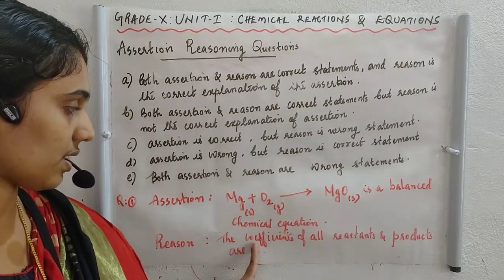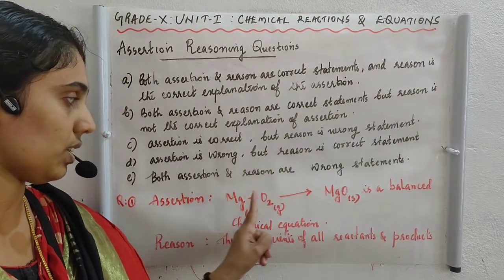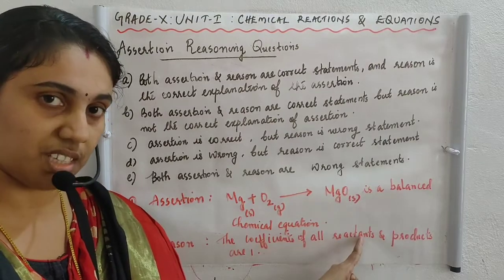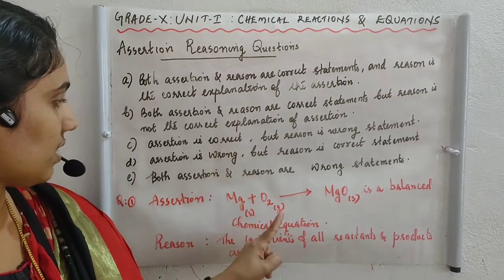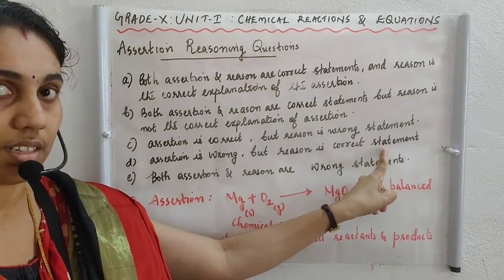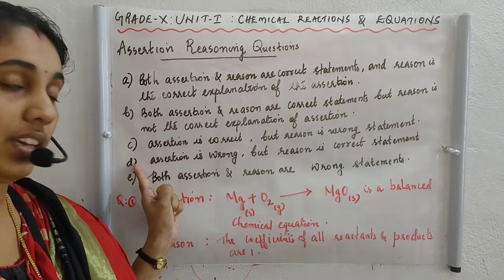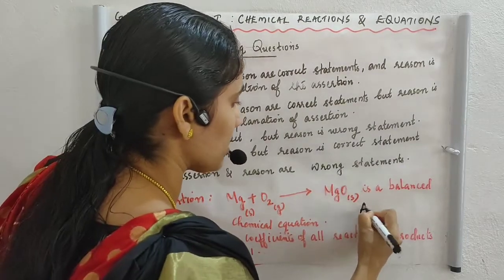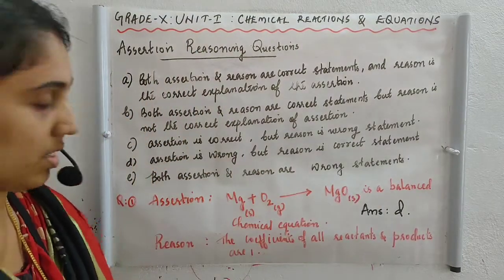However, the reason states that the coefficients of all reactants and products are 1 — and indeed, the coefficient of magnesium is 1, oxygen is 1, and magnesium oxide is 1. So the reason is a correct statement. Therefore, assertion is wrong but reason is correct — the answer is option D.